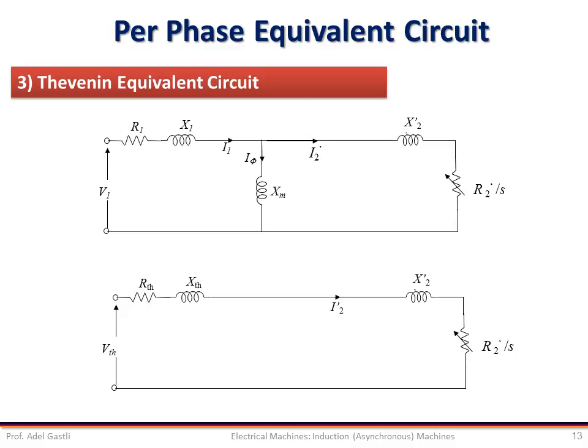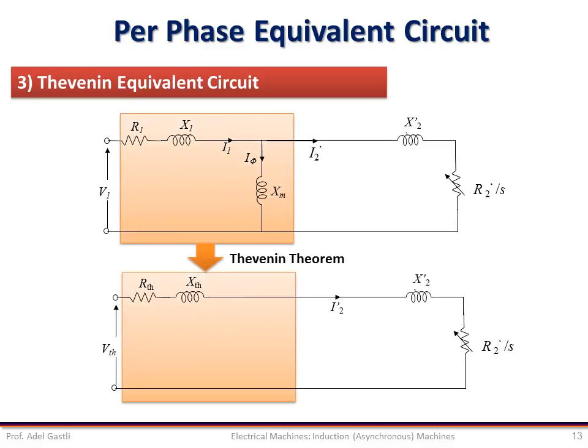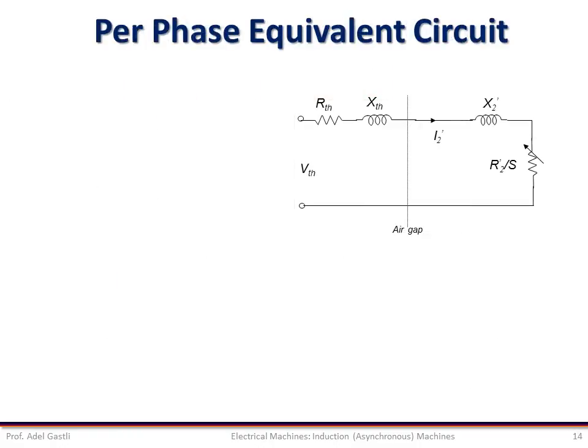The Thevenin equivalent circuit can be produced from the IEEE circuit. Applying the Thevenin theorem allows us to get rid of the shunt branch and convert it to series connections of impedance. So V1, R1, X1, and XM in the IEEE circuit can be replaced by the Thevenin equivalent circuit values: V_Thevenin, R1_Thevenin, and X_Thevenin.